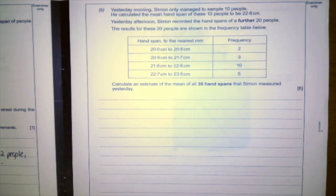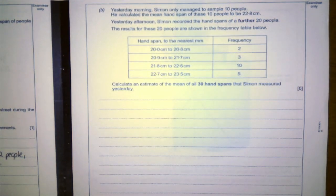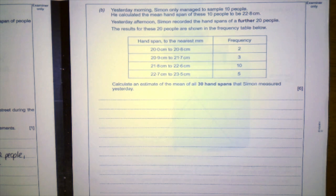Part B. Yesterday morning, Simon only managed to sample 10 people. He calculated the mean hand span of these 10 people to be 22.8 centimeters. Yesterday afternoon, Simon recorded the hand spans of a further 20 people. These are the results. Calculate an estimate of the mean for all 30 hand spans that Simon measured yesterday.